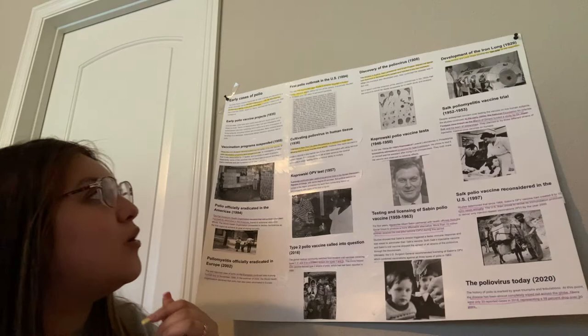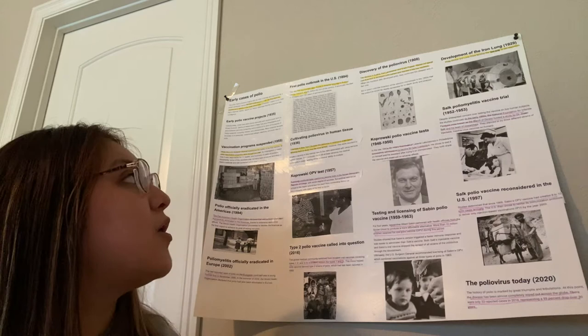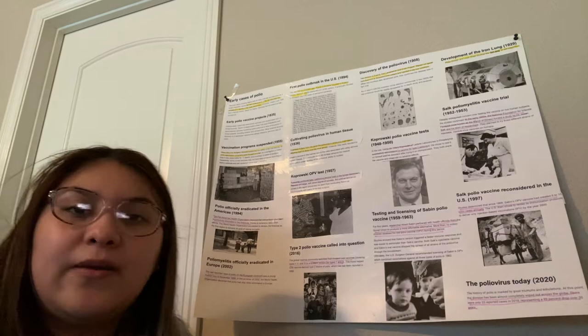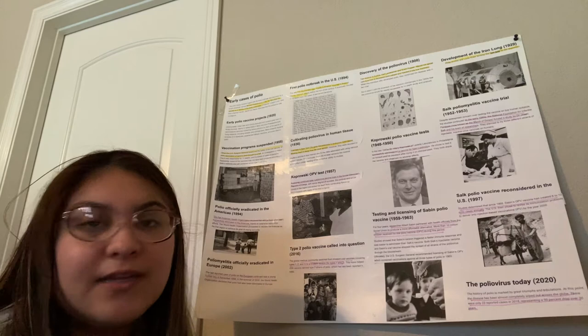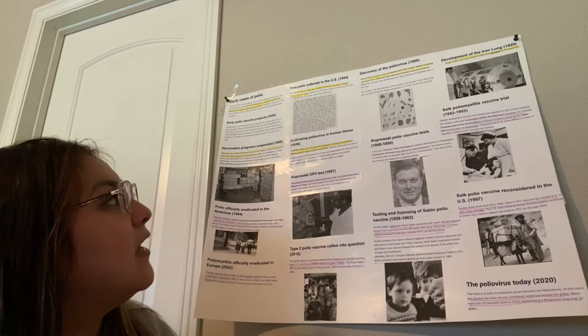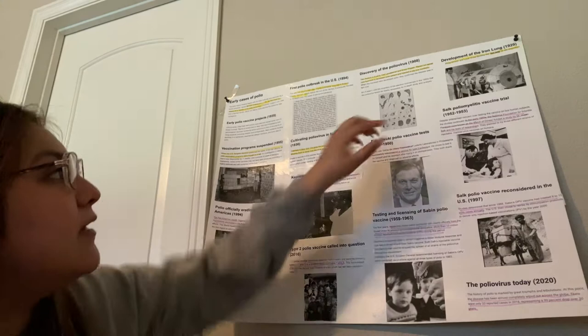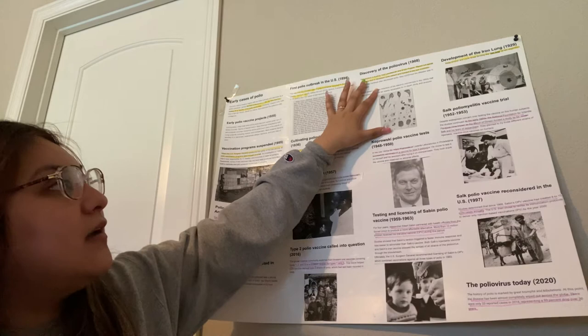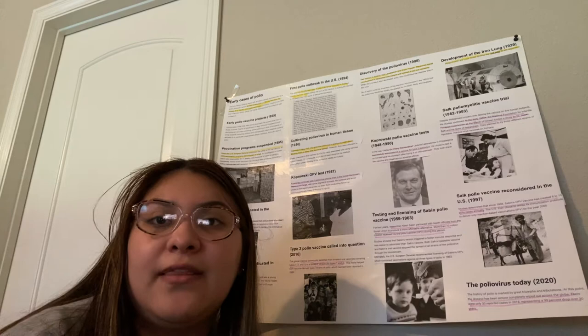Moving on to 1908: two doctors who lived in Austria — Carl Landsteiner and Irwin Popper — filtered out spinal cord fluid from a deceased polio patient and injected it into live monkeys. What they wanted to do was confirm that the polio disease was fatal, and it was — it was fatal and it was viral. This image shows what polio looks like under the microscope.